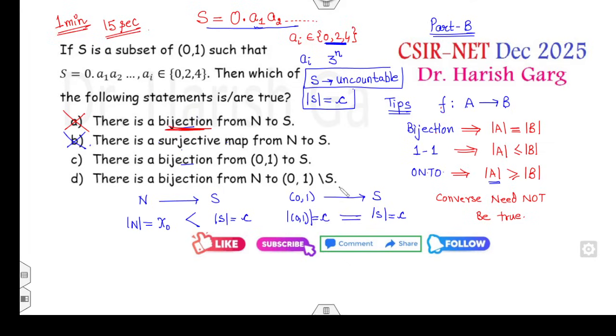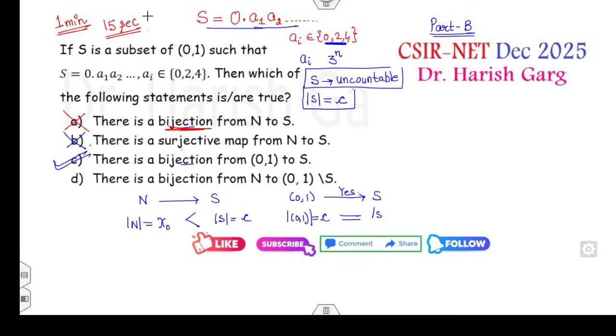Look at the C option: there is a bijective map from (0,1) to S. The cardinality of S is c, cardinality of (0,1) is also c. Both are same, yes there is a bijective map from (0,1) to S.